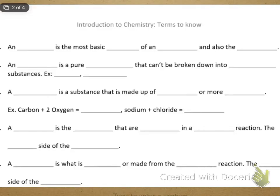I would circle or highlight or underline the first word when you write the first word down because that's the term we're defining. So for the first one, number one, an atom is the most basic particle of an element and also the smallest. So make sure that you circle or highlight the word atom.